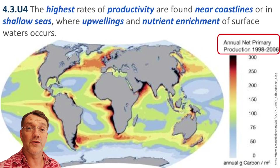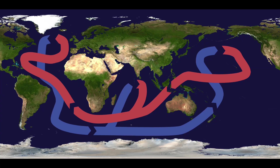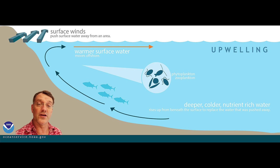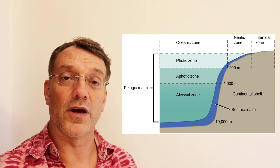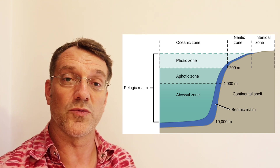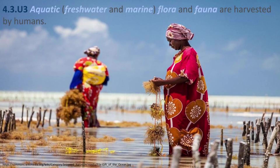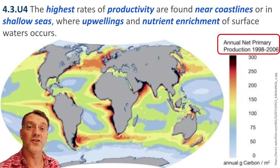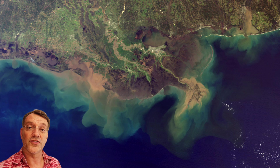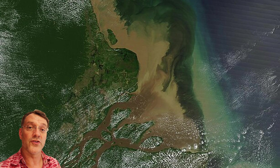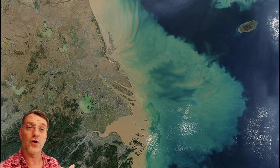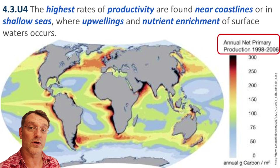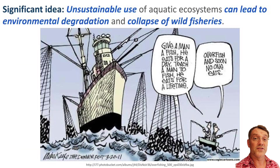The highest rates of productivity in aquatic ecosystems tend to happen along coastlines and in shallow seas. Because of the global ocean conveyor system, we get upwellings of nutrient-rich water from deep in the oceans as currents approach landmasses. Shallow seas are more productive because light penetrates them and the water stays warmer — ideal conditions for aquatic flora. Productivity is also high near coastlines because major rivers flow in, carrying sediment, phosphates, nitrates, and other nutrients from the land.